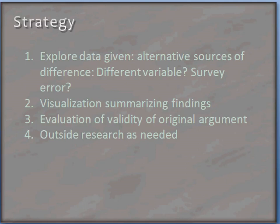We'll also consider, based on the data provided, whether survey error could be a factor. We noticed that there were definitely more factors in play than the single factor — race — that Rimpel mentioned. We'll look at alternative ways of summarizing the findings that Rimpel summarized in her chart to see whether we can come up with a different visualization that shows a different perspective. Once we've created a different visualization and completed our analysis, we'll place this information in the context of the original argument and evaluate its validity.